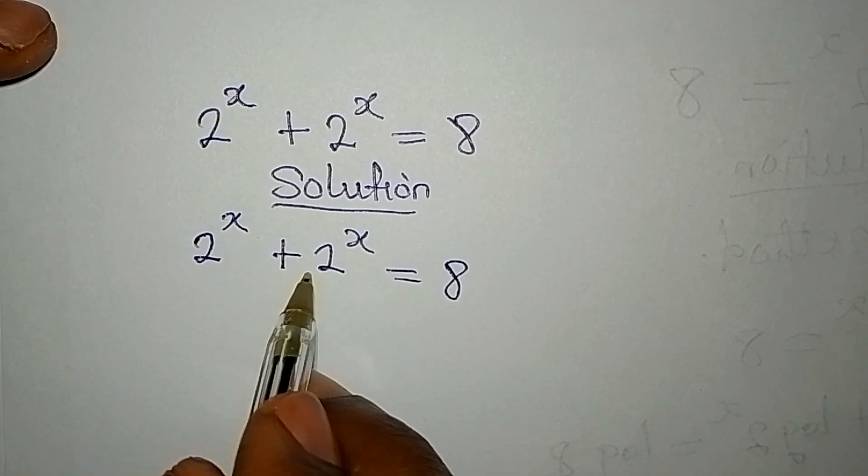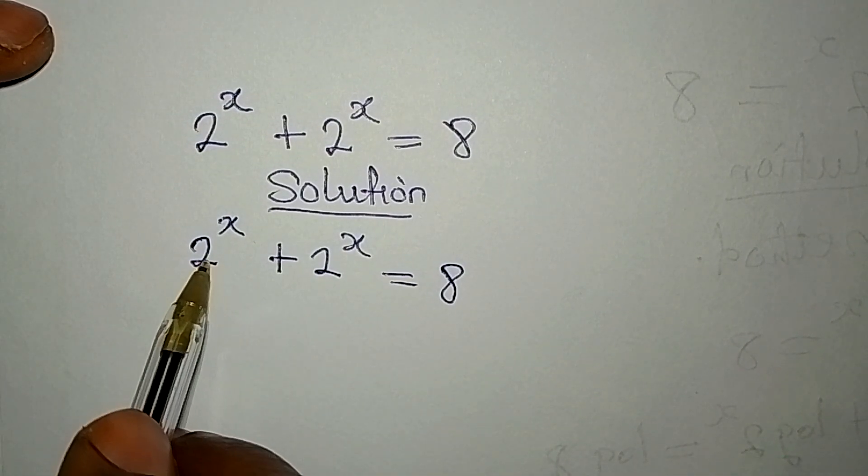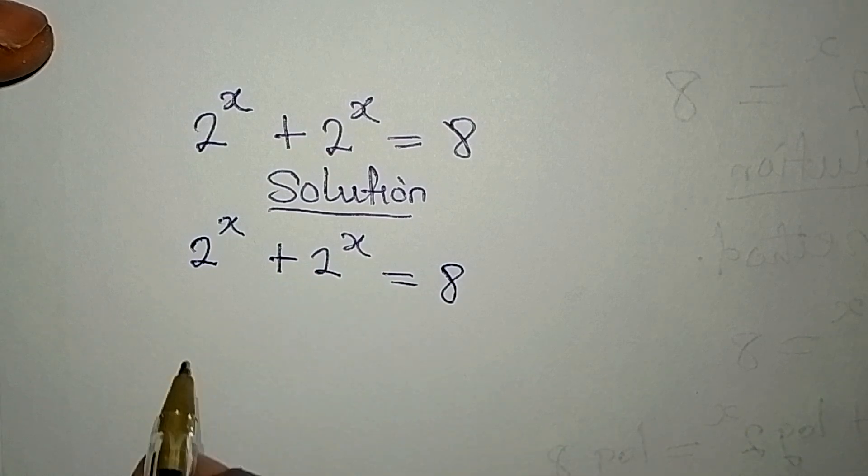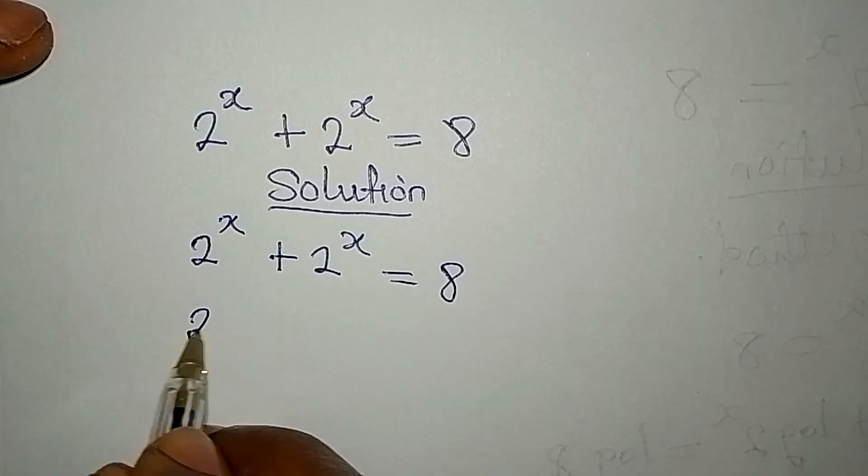Now when you're adding this, you add it as if you're adding a variable like x or y, because a plus a is 2a. So 2 to power x plus 2 to power x will give us 2 times 2 to power x.